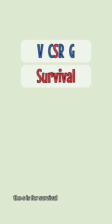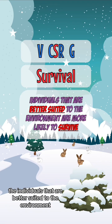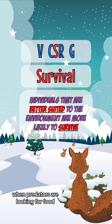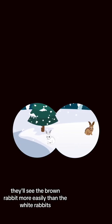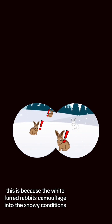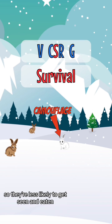The S is for survival. Let's say these rabbits live in a snowy environment. The individuals that are better suited to the environment are more likely to survive. In this case, when predators are looking for food, they'll see the brown rabbit more easily than the white rabbits. This is because the white-furred rabbits camouflage into the snowy conditions, so they're less likely to get seen and eaten — so they survive.